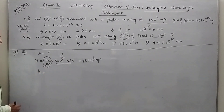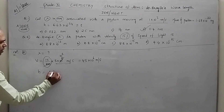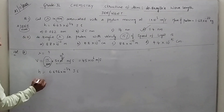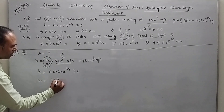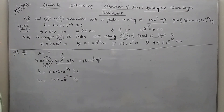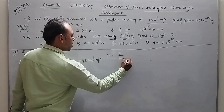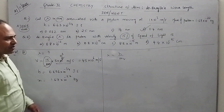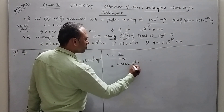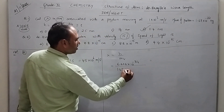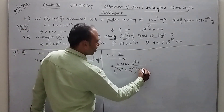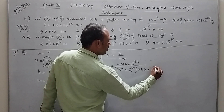H is not given, so we take it as 6.626 into 10 to the power of minus 34 joule into second. Mass of proton, we know from the first question: 1.67 into 10 to the power of minus 27 kg. Lambda is equal to H by MV. Now substitute the values: 6.626 into 10 to the power of minus 34 by 1.67 into 10 to the power of minus 27, into velocity 45 into 10 to the power of 6.